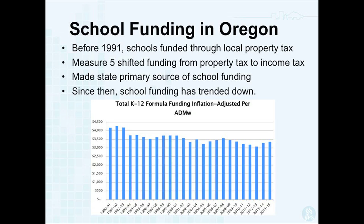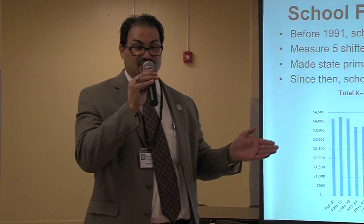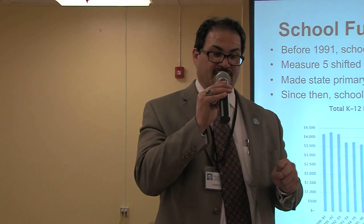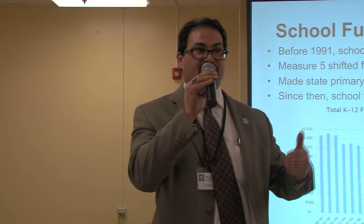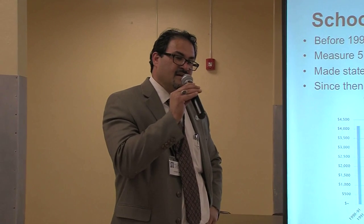This slide shows school funding in Oregon — it's an adjusted dollar amount per student adjusted for inflation. If you look at the number where we are today, it's less than what we had in 1991, about 20 years ago. The point is we're not necessarily getting funding even at the level of about 20 years ago. Since 1991, we had a shift in funding — our funding used to be almost completely from local sources. Measure 5 shifted the funding from the local taxpayer to the state, and we now get about 38% of our resources from local taxpayers.